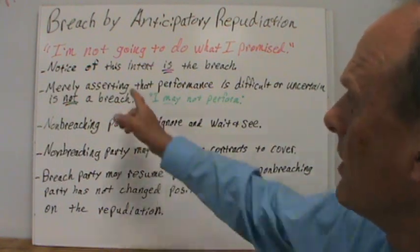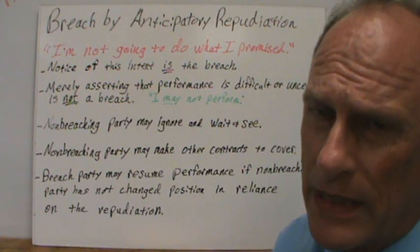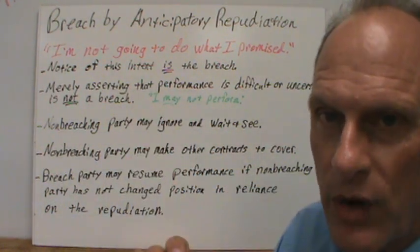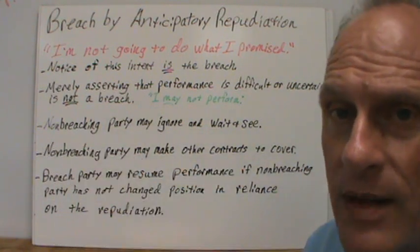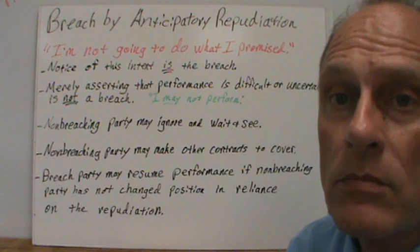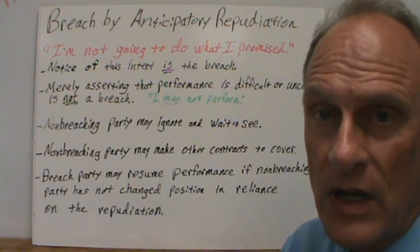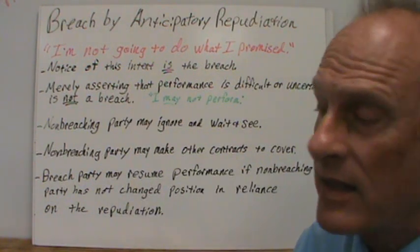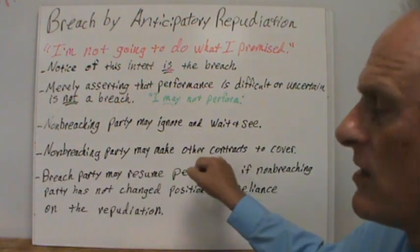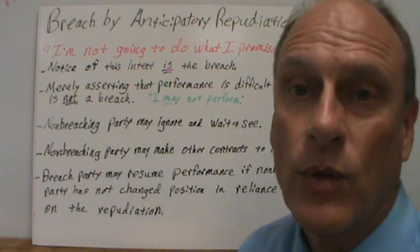Be aware that merely asserting that performance is uncertain or may be difficult — saying 'I may not be able to perform' — that is not a breach. Now, what about the non-breaching party? When they get this communication, the non-breaching party can ignore it and wait to see if the time for performance comes and goes without performance, at which point there's no doubt of the breach. But they don't have to do that — they can treat the notice as the breach and go ahead and make other contracts to cover whatever their needs were.